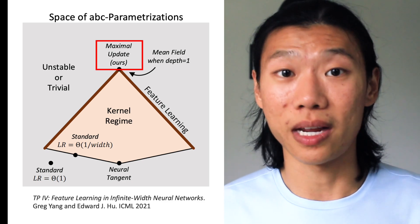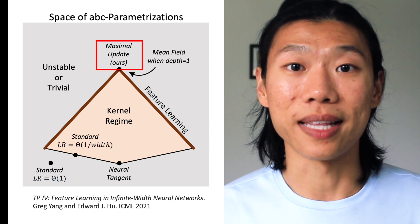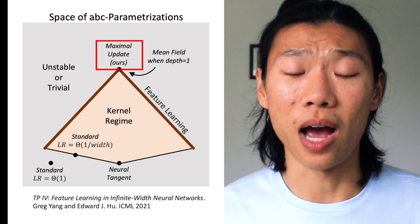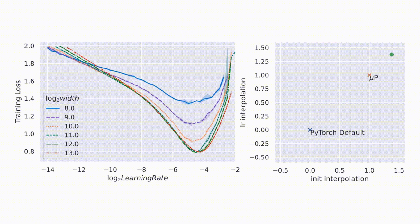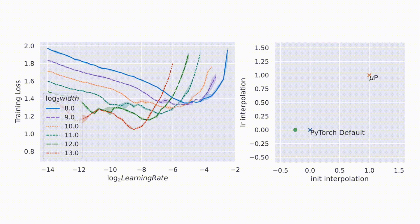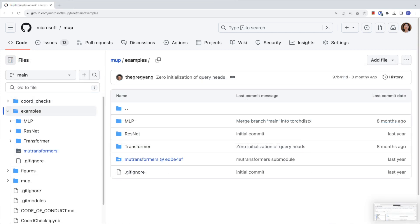MuP is the unique parameterization that maximizes feature learning, because other stable parameterizations fail to learn features in some layers. The Mu in MuP actually stands for maximal update for this reason. MuP is also unique in that it is the only parameterization that gives empirical hyperparameter stability, as shown in this animation where we sweep learning rate for different widths. Check out Greg Yang's two-hour talk in the video description for a more technical take on MuP. Finally, how can you use MuP and MuTransfer today? The easiest way is through the MuP repo on GitHub. We have examples on MLP, ResNet, and Transformer in the repo, linked in the video description.